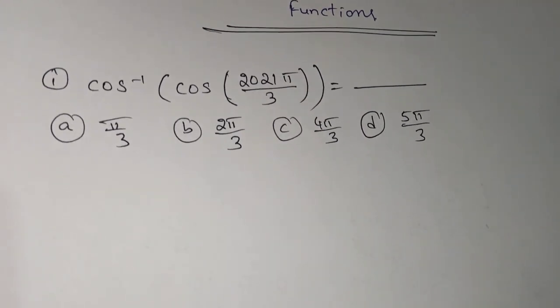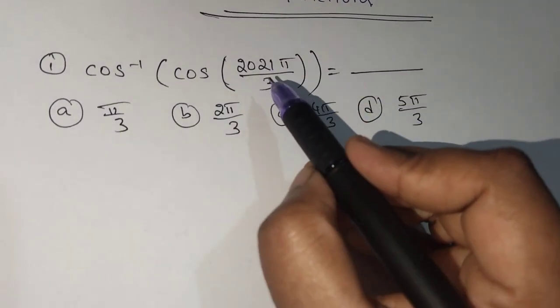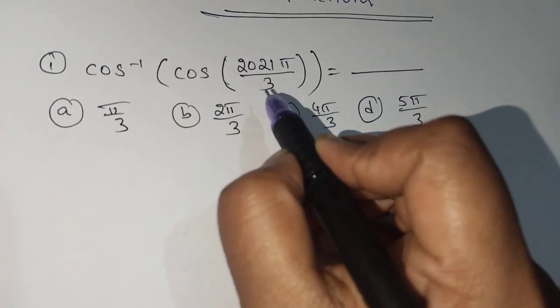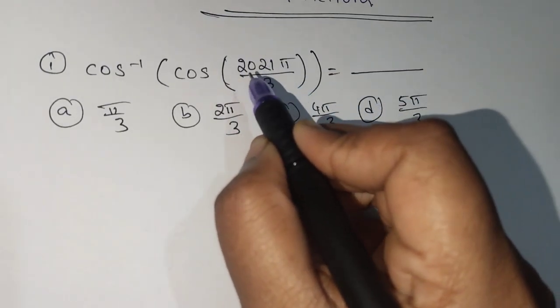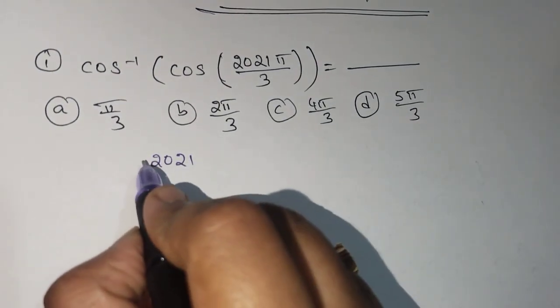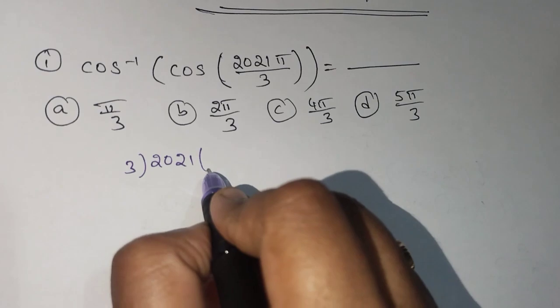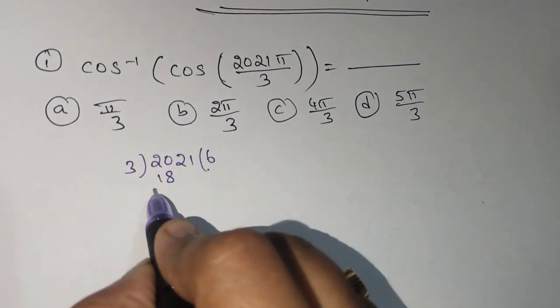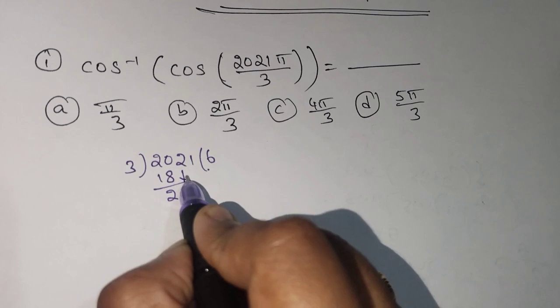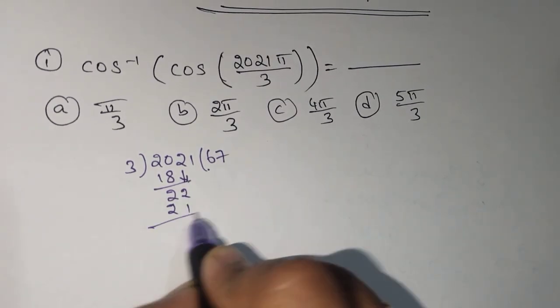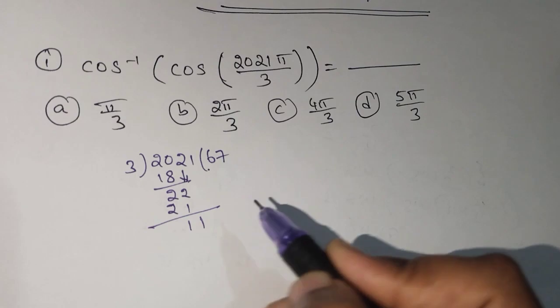First, in the previous video I said consider this number. What is the numerator? The numerator is 2021 divided by 3. So 3 into 6 is 18, take 2 down, 3 into 7 is 21, take 1.